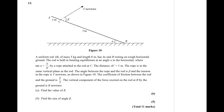A uniform rod AB of mass 5 kg and length 8 meters has its end B resting on the rough horizontal ground. The rod is held in limiting equilibrium at an angle alpha to the horizontal, where tan alpha equals 3 over 4, by a rope attached to the rod at C. The distance AC equals 1 meter. The rope is in the same vertical plane as the rod. The angle between the rope and the rod is beta, and the tension in the rope is T newtons. The coefficient of friction between the rod and the ground is 2 over 3. The vertical component of the force exerted on the rod at B by the ground is R newtons.